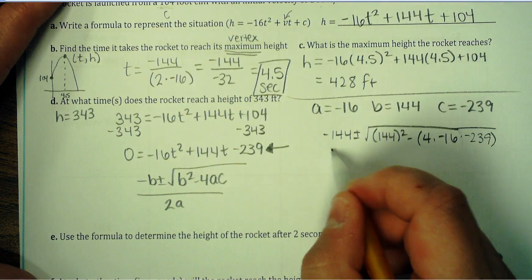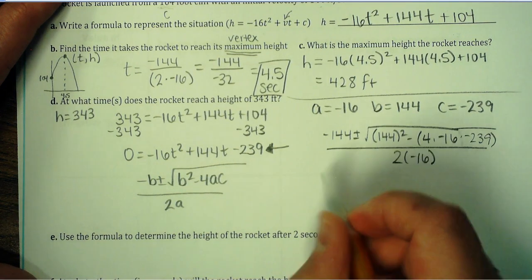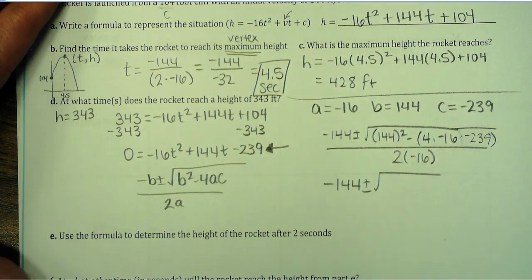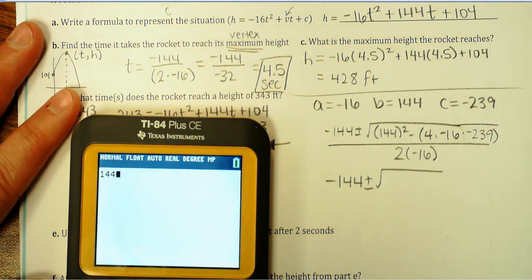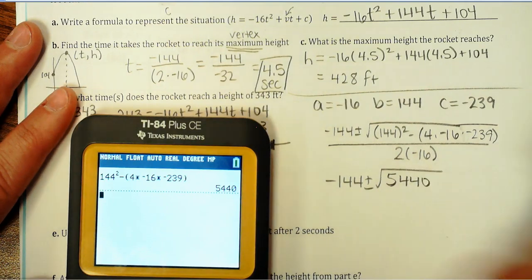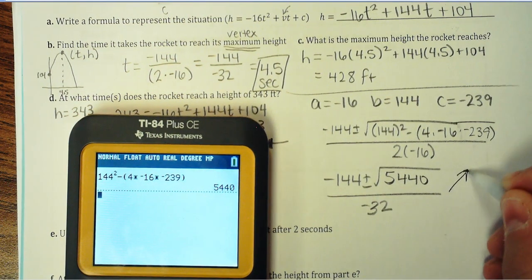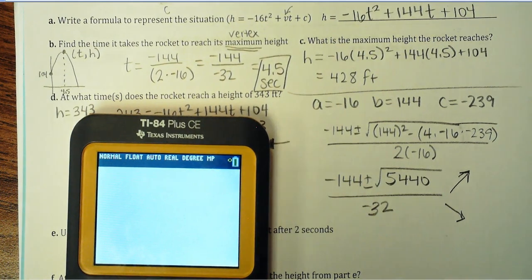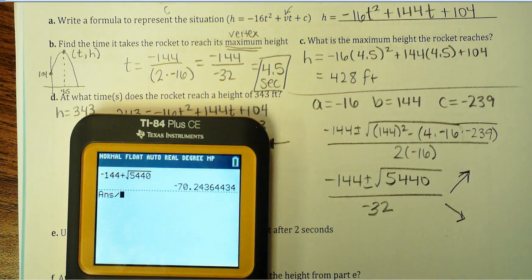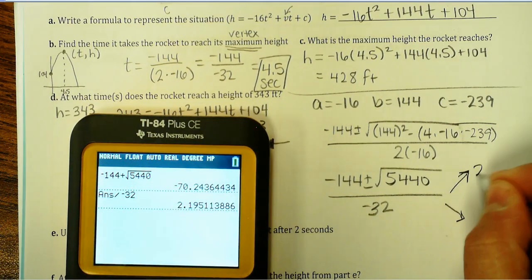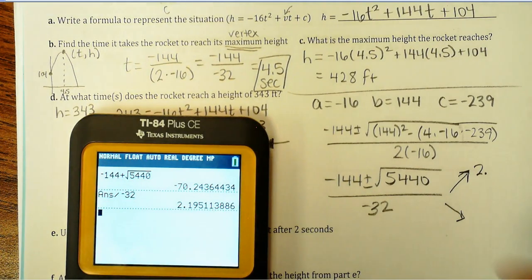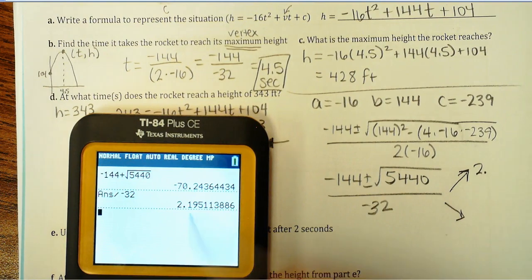So negative 144 plus or minus — I usually just go ahead and do the whole thing on the calculator: 144 squared minus 4 times negative 16 times negative 239. This is going to be 5440. The bottom is negative 32. I'm going to show you how to type this into the calculator. Two possible answers: I'm going to take negative 144 plus the square root of 5440, hit equals, and divide that by negative 32. To the nearest hundredth, that rounds up to 2.00.